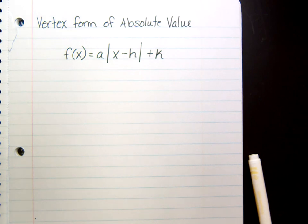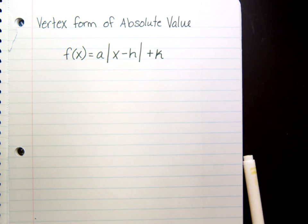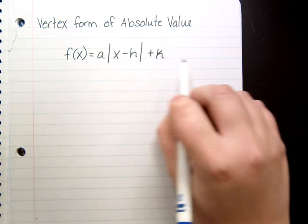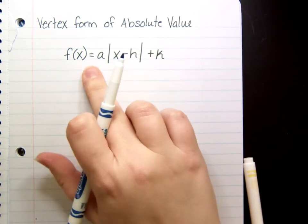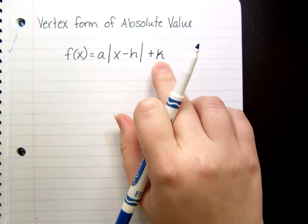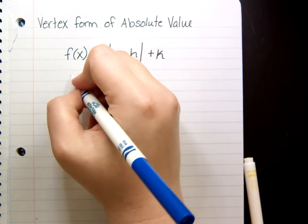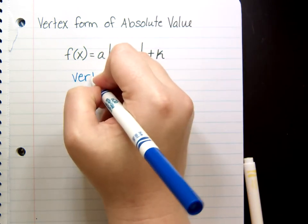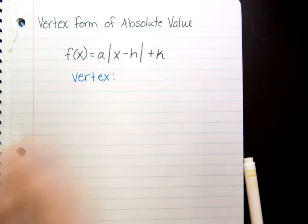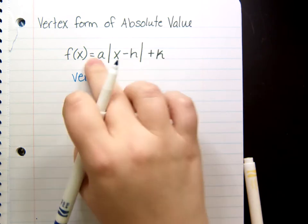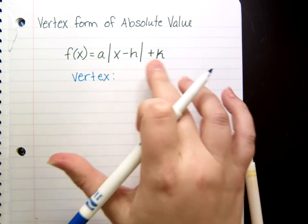In this video, we're going to look at the absolute value vertex form and what information it tells us. And also, it makes our graphing absolute values a little bit easier. In this form, there's certain things that we can get just by looking at this equation written, if it's in this form.